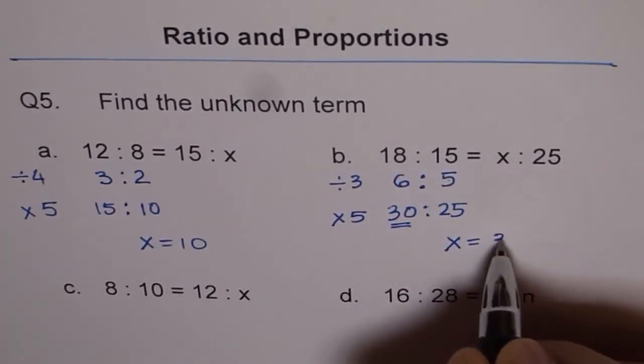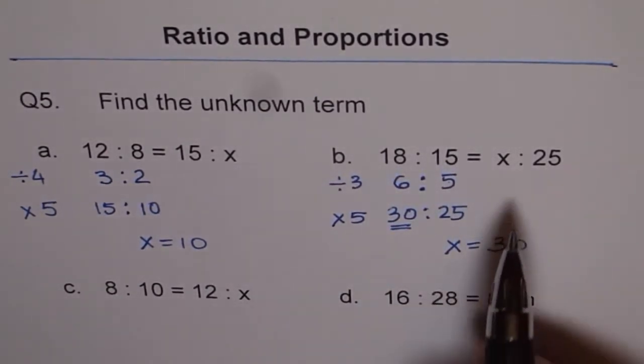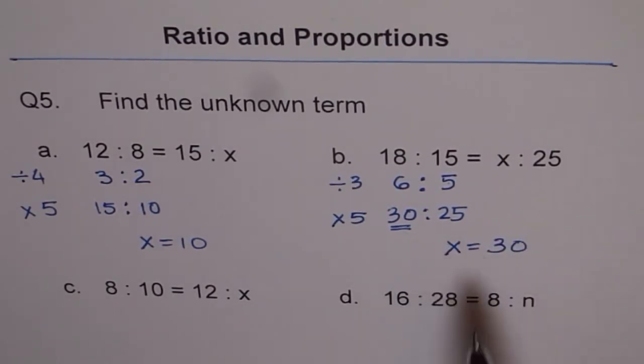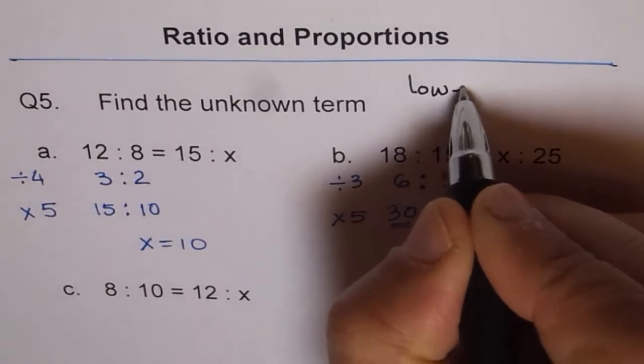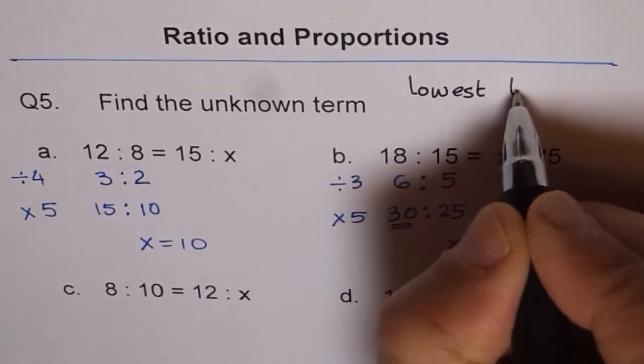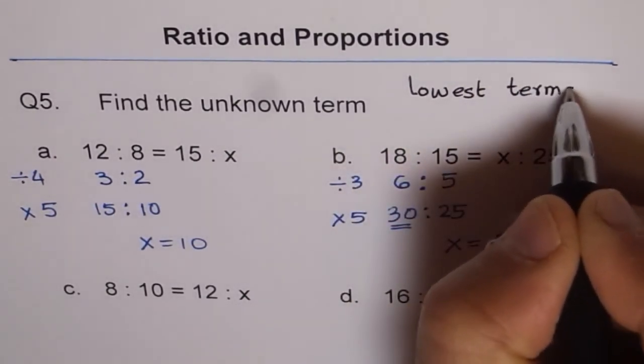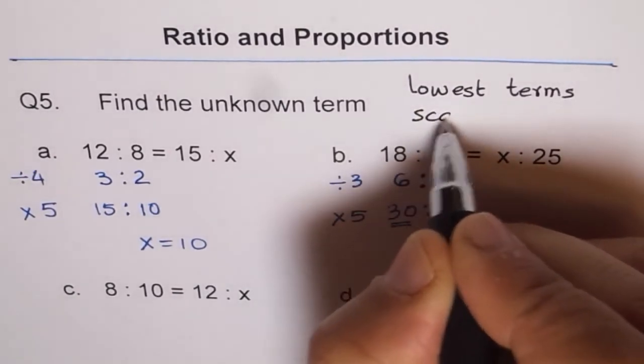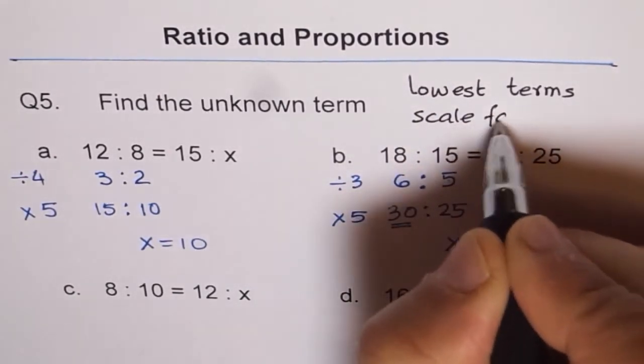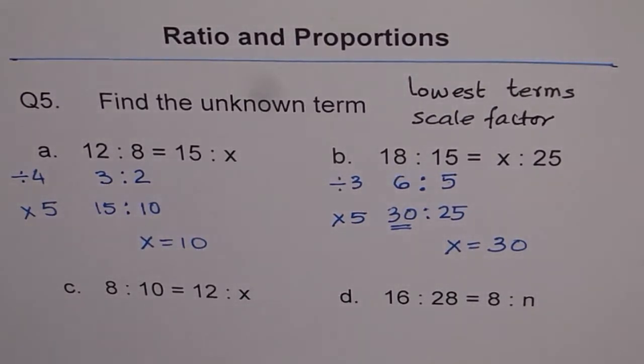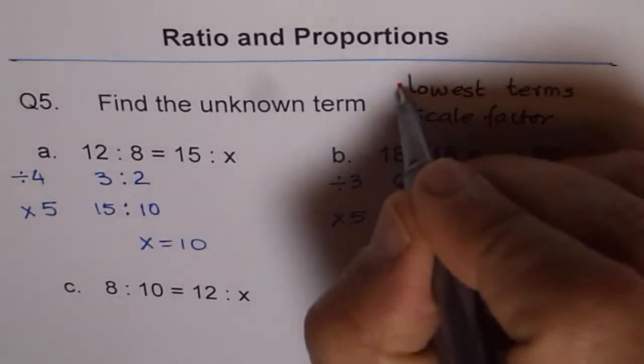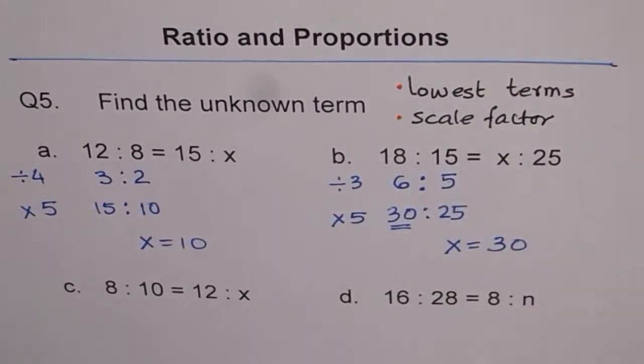X equals 30, and that is how we can find the unknown term. So here, the strategy is to reduce to lowest terms, write in lowest terms, and then use the scale factor. That is what we should do to get our answer in most of the cases which are not very simple.